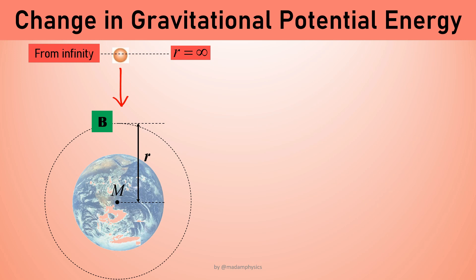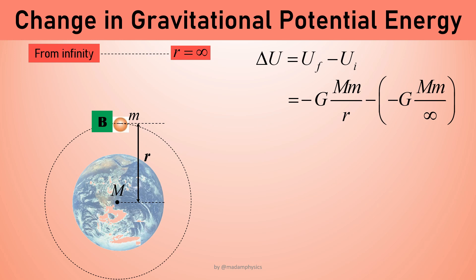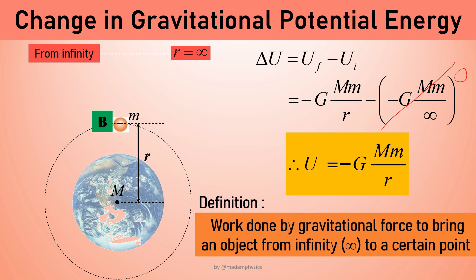If the object is brought from infinity to point B at a height r from the center of the Earth, we calculate the change in potential energy by subtracting the final and initial values. The initial r is infinity, so that term becomes zero, since any number divided by infinity is zero. We arrive at U equals negative GMm over r — the same formula introduced earlier. That is why gravitational potential energy is defined as the work done by gravitational force to bring an object from infinity to a certain point. That's the end of our lesson. Hope to see you again in the next video, and thanks for watching.